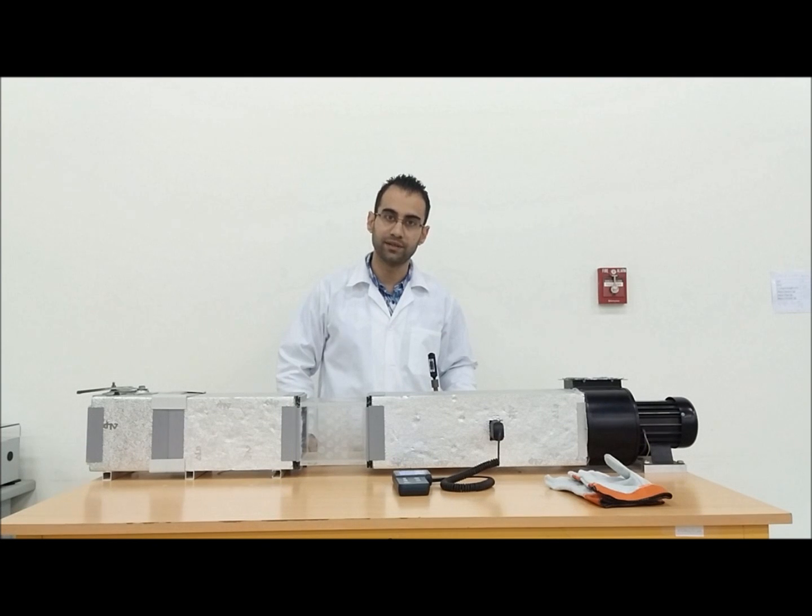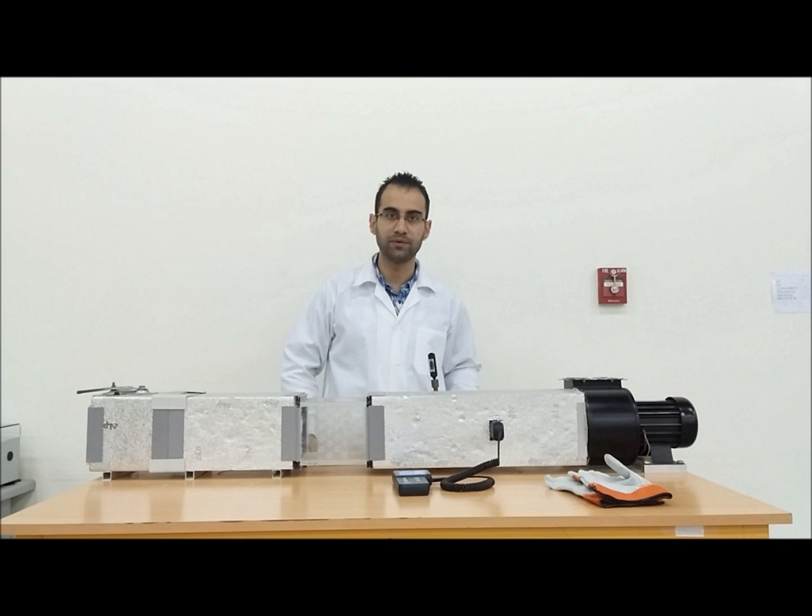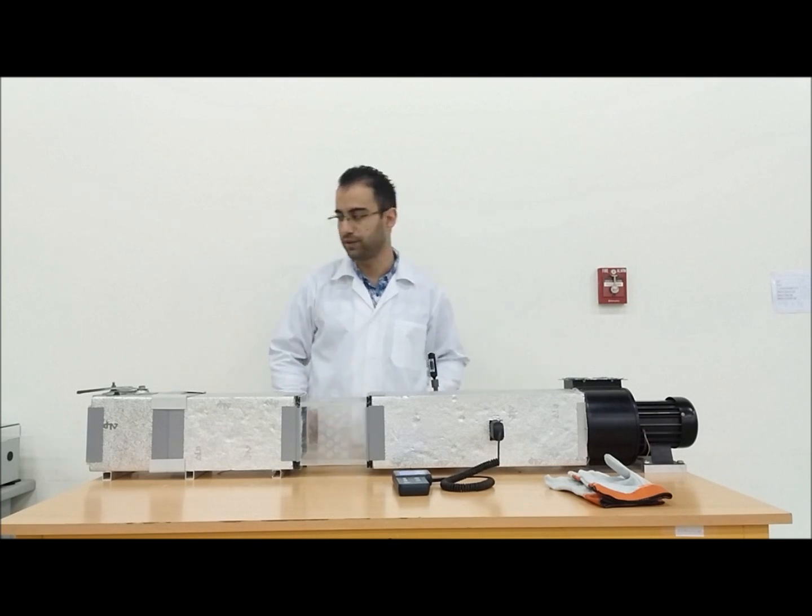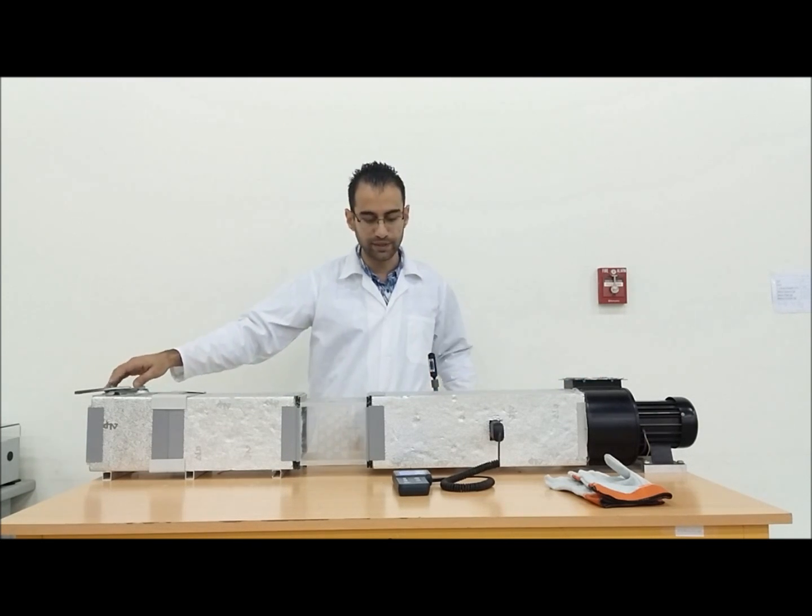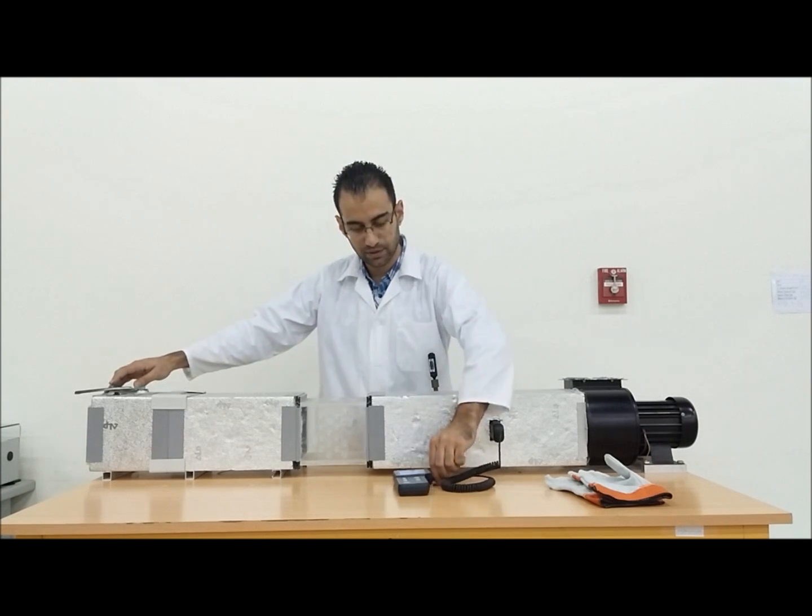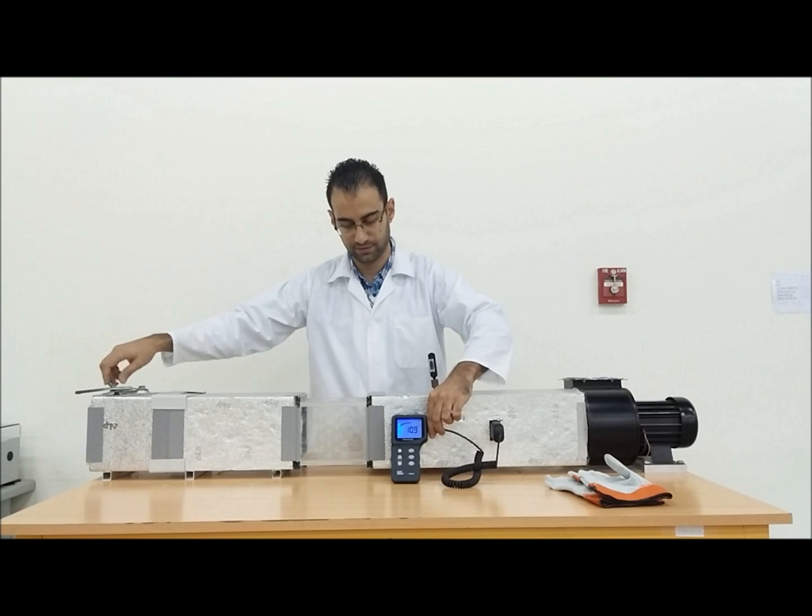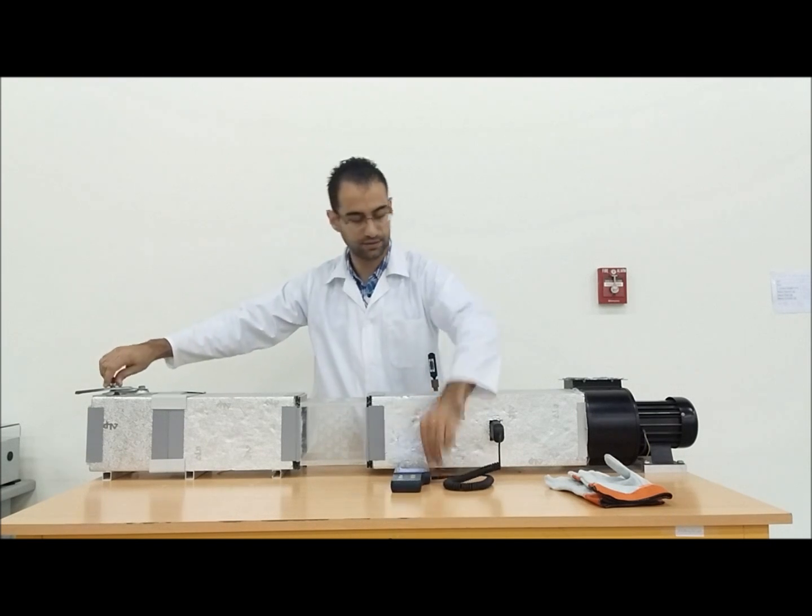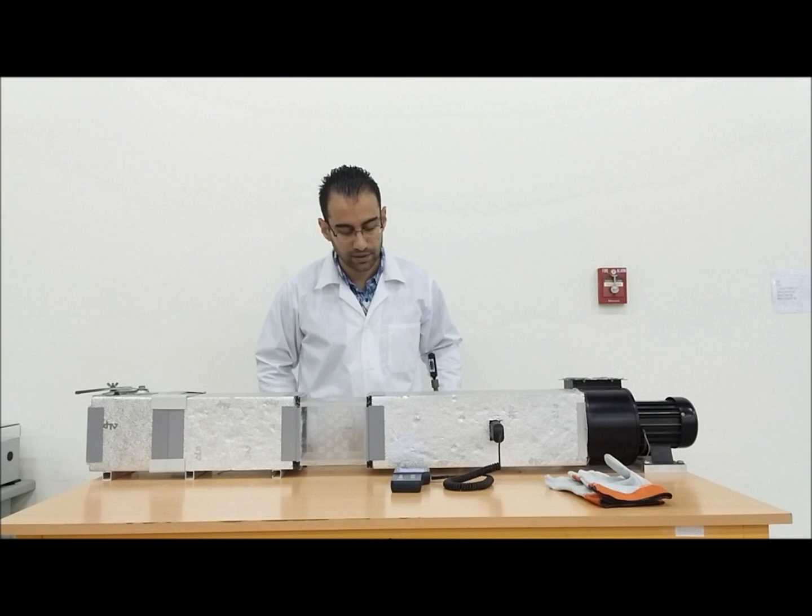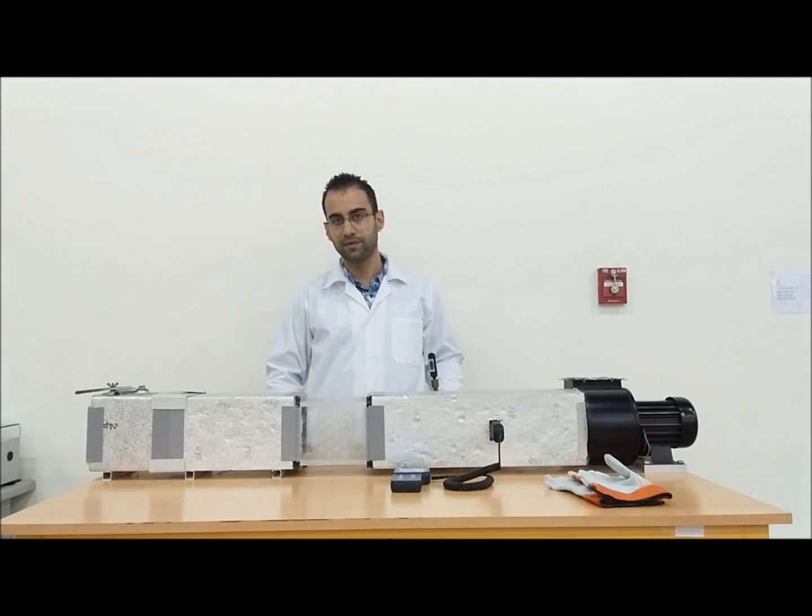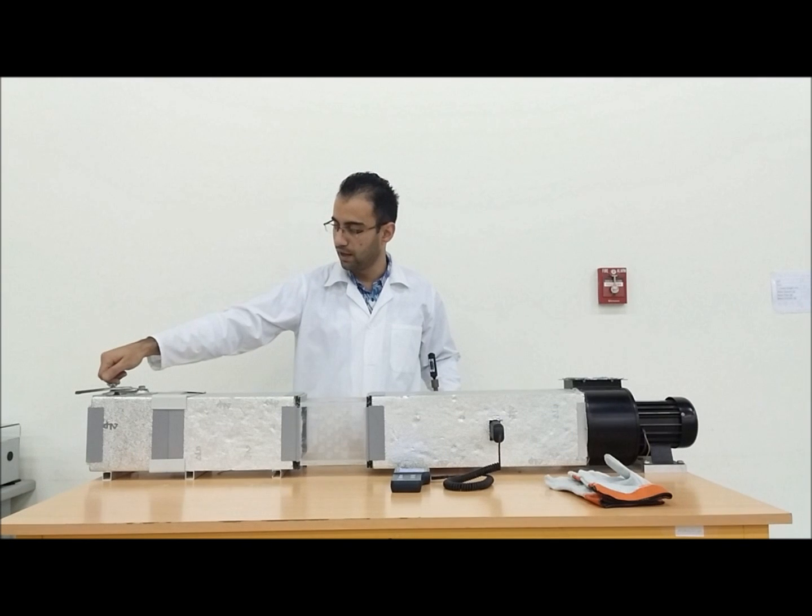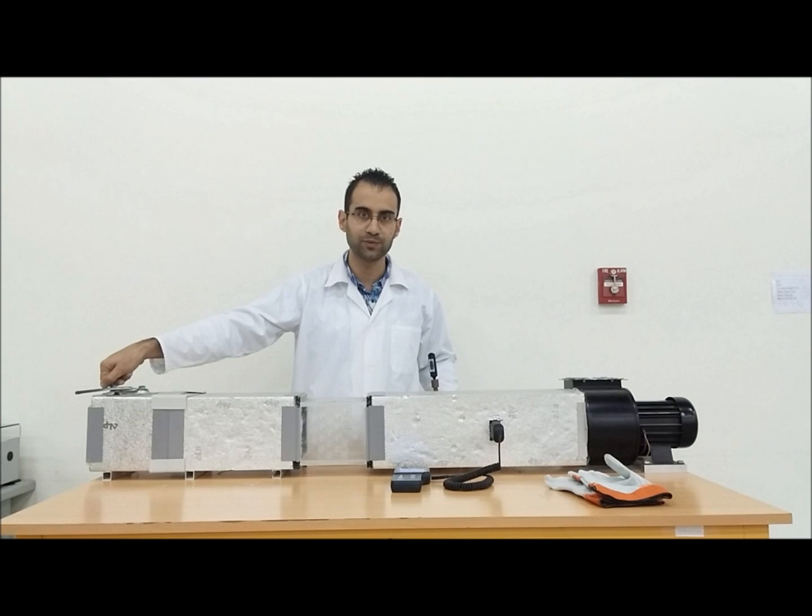We are going to set the air flow before the start of the experiment before getting a full set of readings. So I am going to do that quickly now. I got about 11 meters per second flow at this point. I locked the volume control damper so it doesn't change while we are undertaking the experiment.